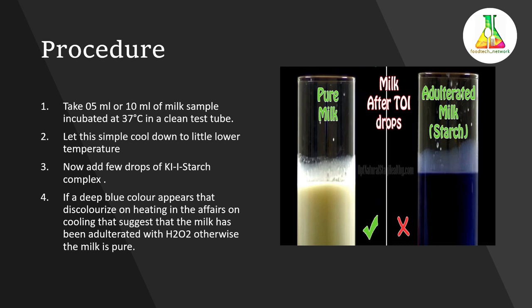If a deep blue color appears — and even a haziness or hissing sound with a foam head on the milk column is observed — that indicates the milk has been adulterated with H₂O₂. Otherwise, the milk is pure. As you can see on your screens, pure milk remains milky white or creamy, while adulterated milk appears deep blue.